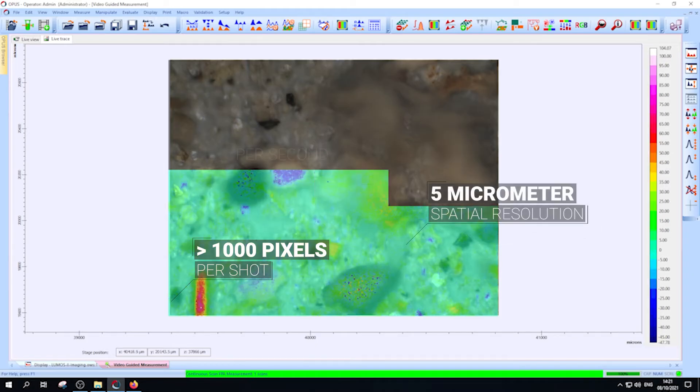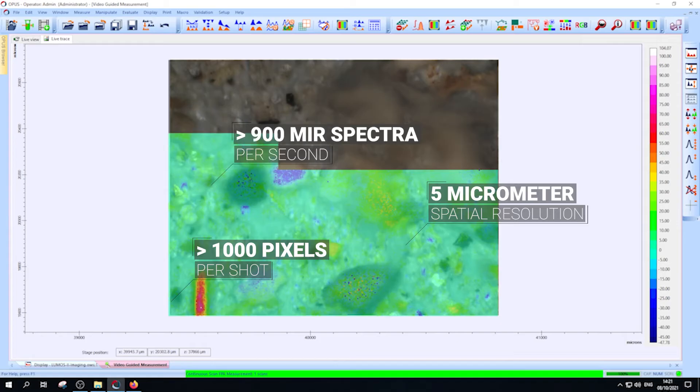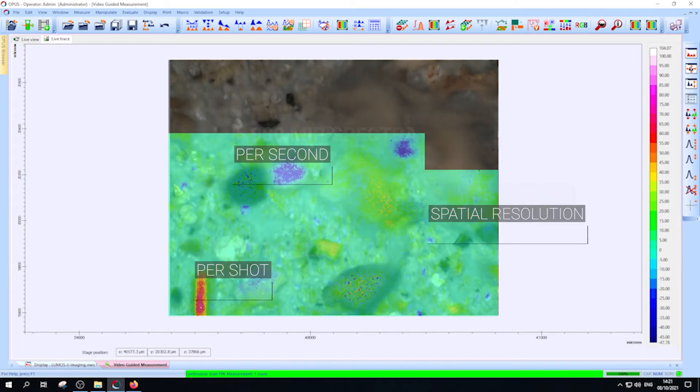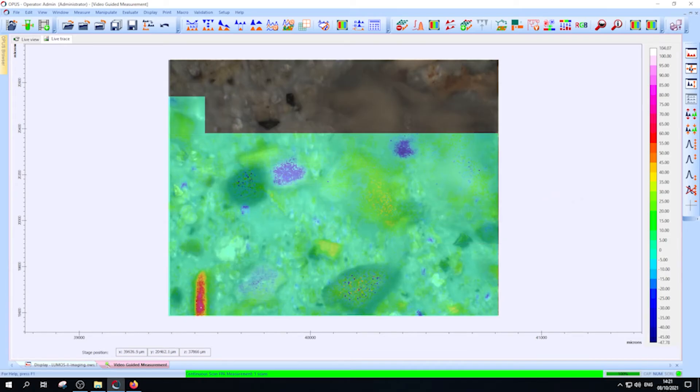We are collecting over 900 full MIR spectra per second, enabling us to get a meaningful and most of all reliable identification result. This shows why FTIR imaging and focal plane array detectors are the gold standard in microplastic analysis.